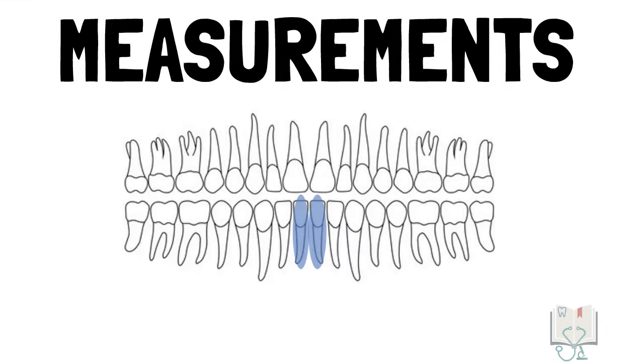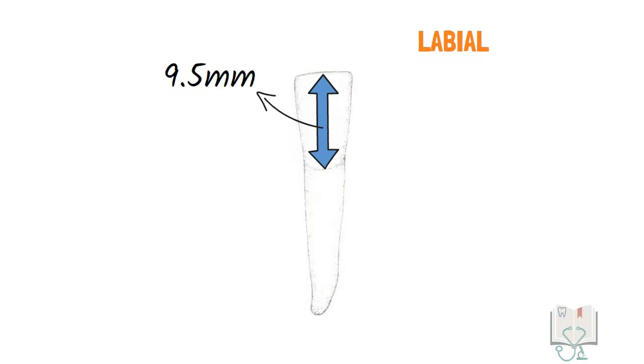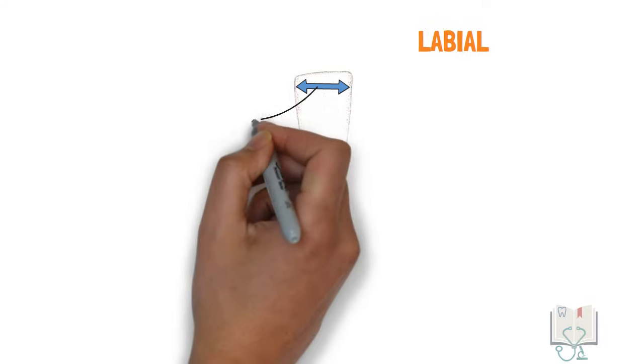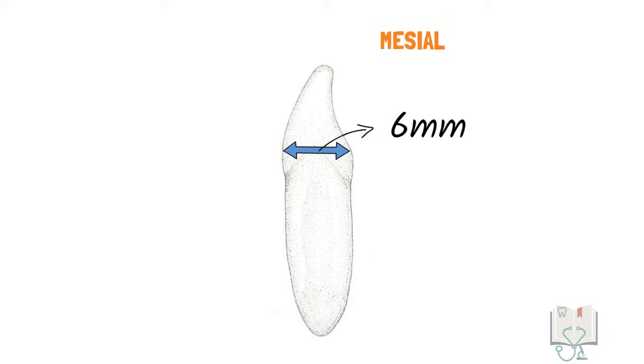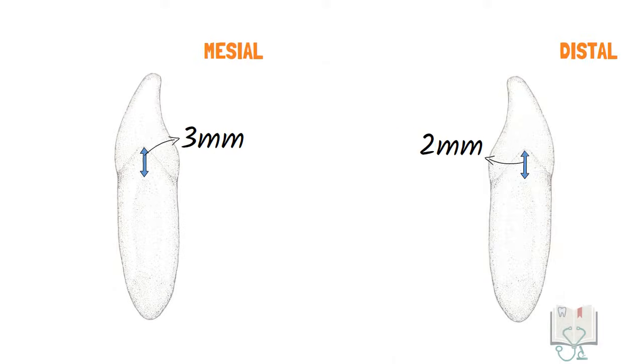Coming to measurements, mandibular central incisor is the smallest permanent tooth in the oral cavity. Its crown length is 9.5 millimeters and root length is 12.5 millimeters. The mesodistal diameter of the crown is 5 millimeters and at cervix it is 3.5 millimeters. The labiolingual diameter of the crown is 6 millimeters and at cervix it is 5.3 millimeters. The curvature of cervical line on mesial side is 3 millimeters and on distal side it is 2 millimeters.